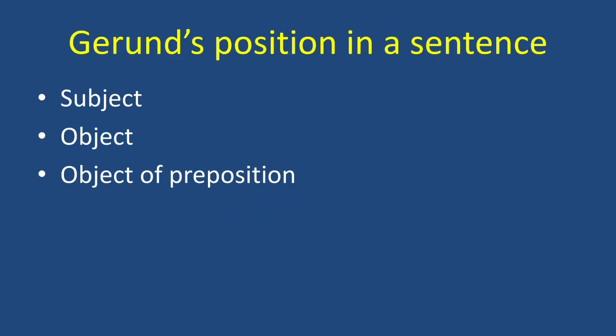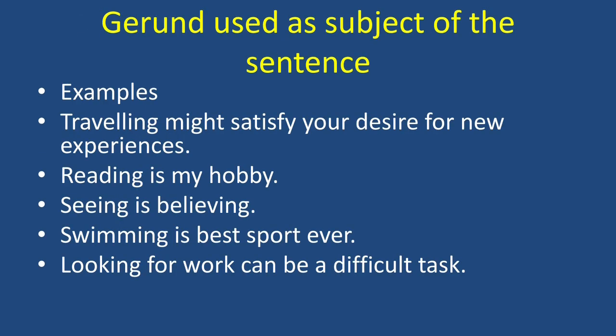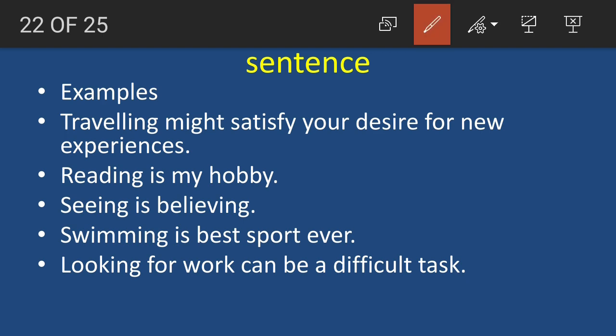Now, what is the position of a gerund? Since a gerund functions as a noun, it may be a subject, an object, or an object of a preposition. Let's see examples of gerunds used as the subject of the sentence. First example: 'Traveling might satisfy your desire for new experiences.'